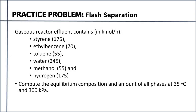For further practice, consider the following problem: a gaseous reactor effluent contains styrene 175 kmol/hr, ethylbenzene 70 kmol/hr, toluene 55 kmol/hr, water 245 kmol/hr, methanol 55 kmol/hr, and hydrogen 175 kmol/hr. You are asked to compute the equilibrium composition and amount of all phases at 35°C and 300 kPa. Note: unlike the previous example with CO2 at high pressure, in this case operating at relatively low pressure you may need to define hydrogen as the Henry component.